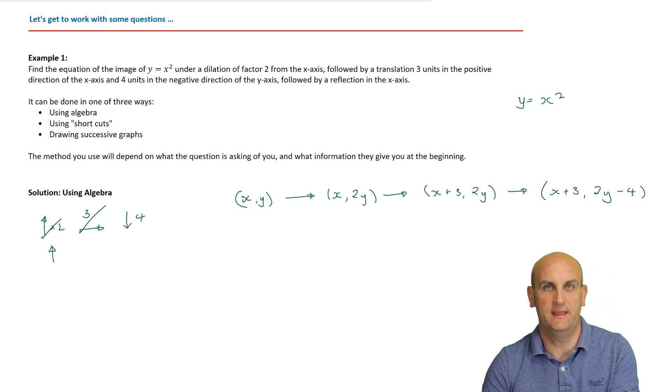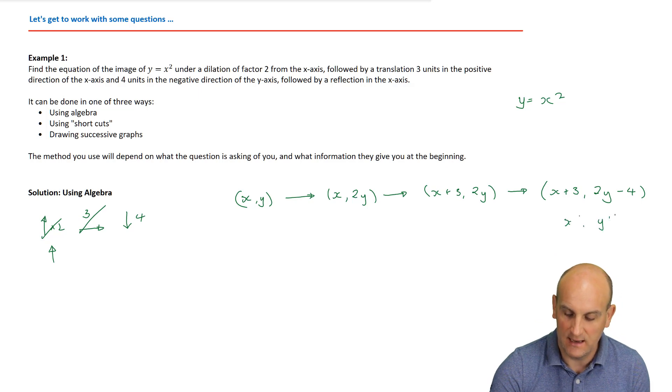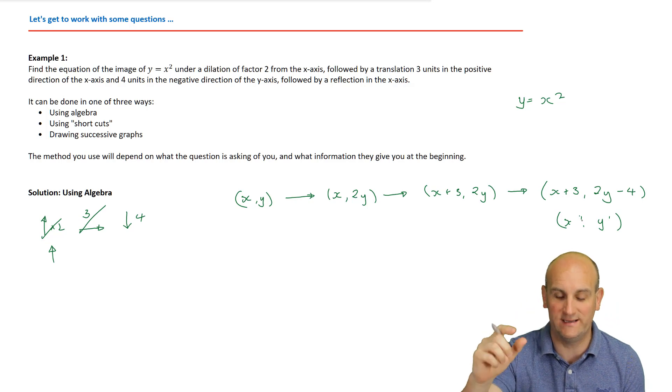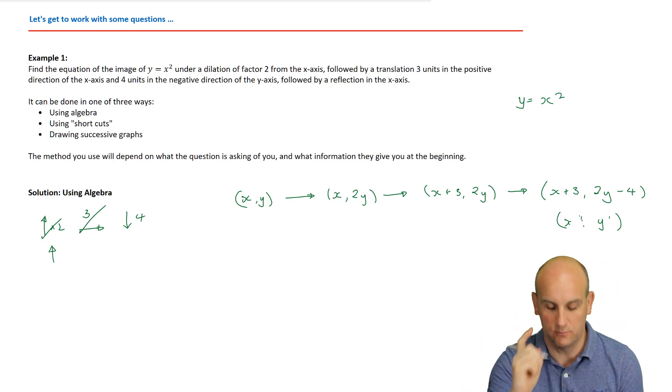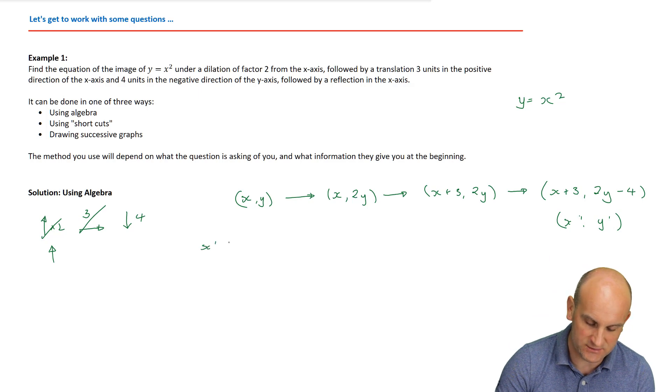So what is that? Well, that's the image now. So taking each of my ordered pairs, that now would describe the image. And we know that the image is given by x dashed and y dashed. Why is that important to me? Because I'm now going to equate these. Why? Well, if you've watched the previous videos, you'll probably understand. But we now know that x dashed is equal to x plus three. And we know that y dashed is given by 2y minus four.